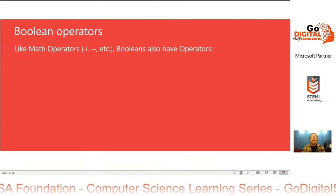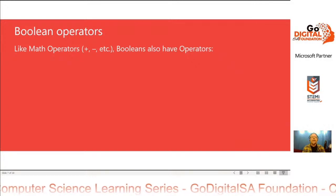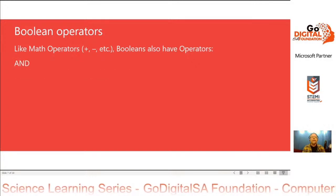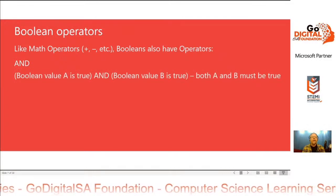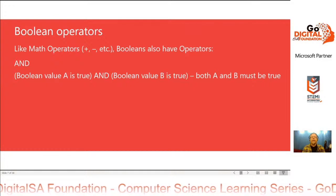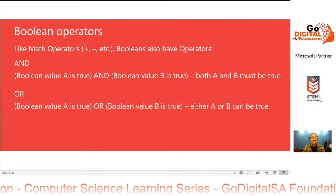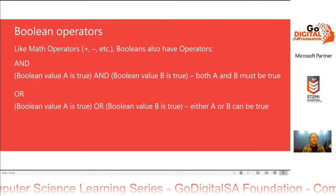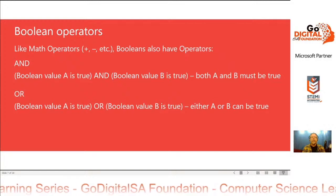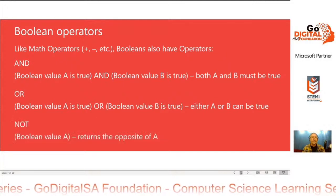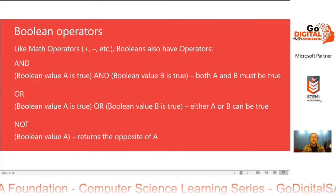Boolean also has operators. Just like math operators like plus, minus, times, and divide, Booleans have operators. The main Boolean operators are AND — where Boolean value A is true AND Boolean value B is true, then both A and B must be true — the OR operator, where if A is true OR B is true, then either A or B can be true. And NOT — Boolean value A returns the opposite of A.